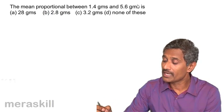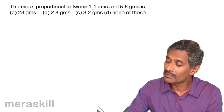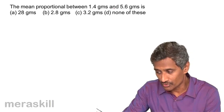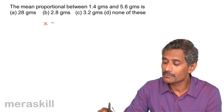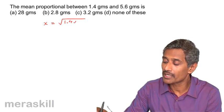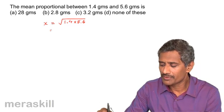Okay. Now, we have here the mean proportional between 1.4 grams and 5.6 grams. Let's see. We continue the same exercise. We find X as the mean proportional. It's going to be root 1.4 times 5.6. How do we do this?